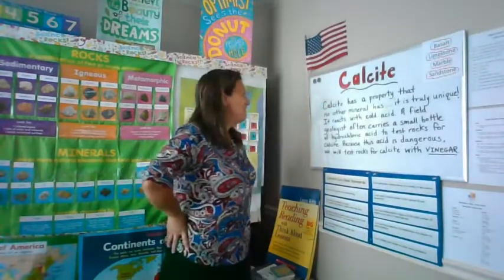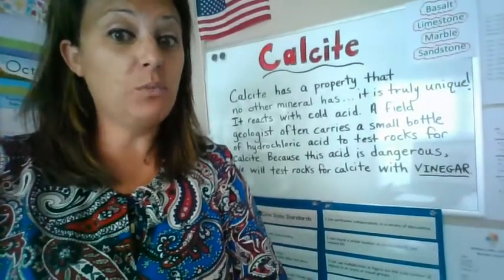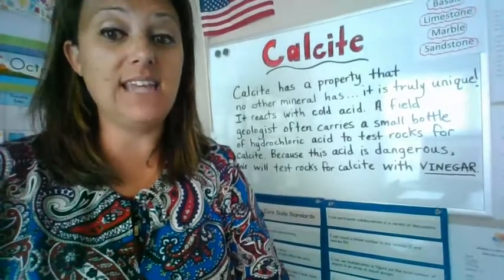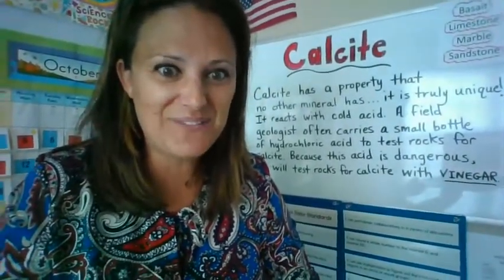Now I have something very exciting to share with you, because the whole idea of the Calcite Quest is that the mineral calcite has a special property. Calcite has a property that no other mineral has — it's truly unique. It reacts with cold acid. A field geologist often carries a small bottle of hydrochloric acid to test rocks for calcite. Because this acid is dangerous, we will test rocks for calcite with vinegar. Let's see what happens in lesson two. Go ahead and pause the video — see you soon.